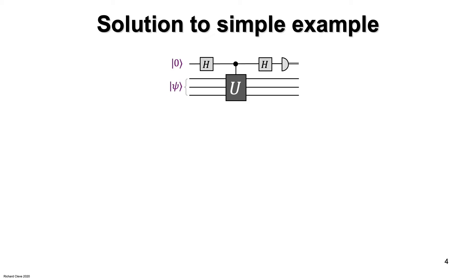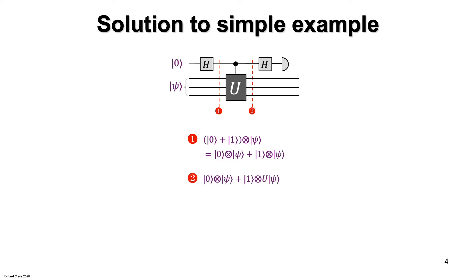Let's see a solution. Here's how it works. The first Hadamard puts the control qubit into superposition. Next, notice what the controlled-U gate does. The ket-zero tensor psi term in the superposition does not change, but the ket-one tensor psi term changes to ket-one tensor U of psi. This is just following the definition of a controlled-U gate.